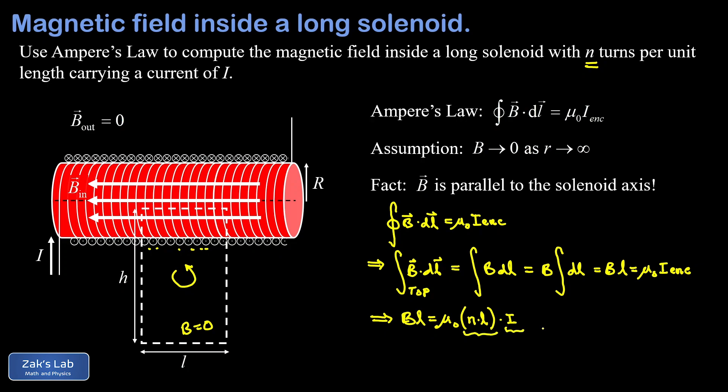The l's cancel and we arrive at the classic result: the magnetic field inside a long solenoid is B = μ₀nI, where little n is the number of turns per unit length, not the total number of turns. In the next video we derive a formula for the magnetic field inside a toroidal coil — a solenoid bent into the shape of a donut.